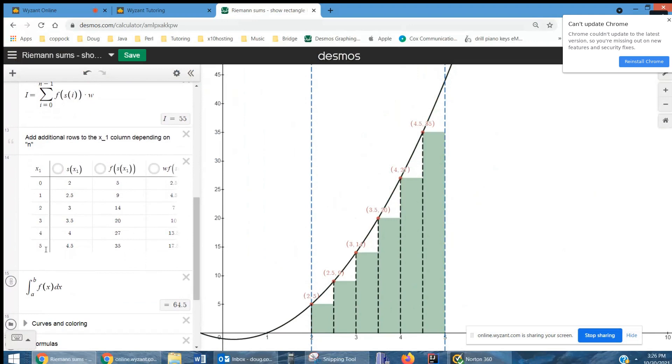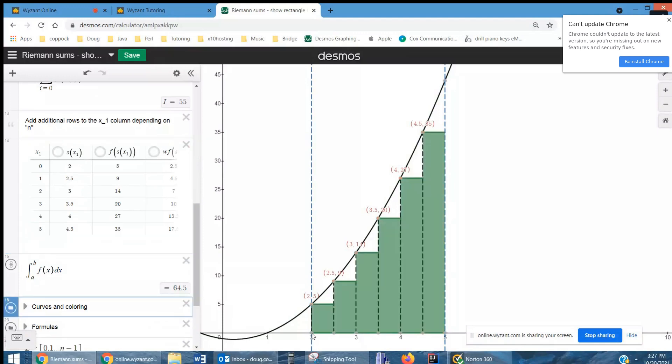And this little table here, you can add additional rows if you're increasing the number of rectangles. But if you leave it like this, from 0 to 5, you've got your 6 rectangles. This column is actually s of x sub i is the value of the left-hand endpoint. You can see we've got 2 there. We've got 2 1⁄2. We've got 3 and so on to 4.5. And f of x sub i gives us the height at each of those endpoints.